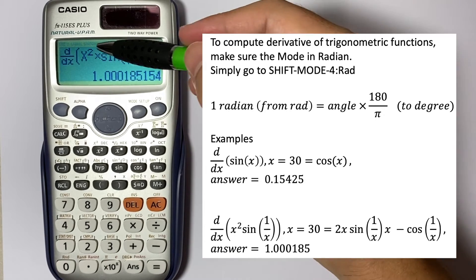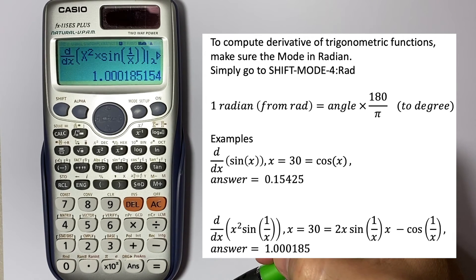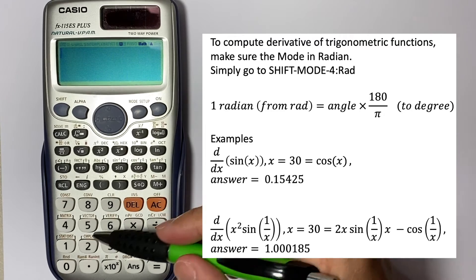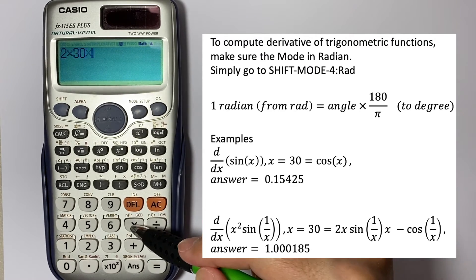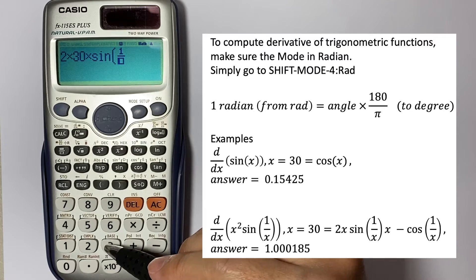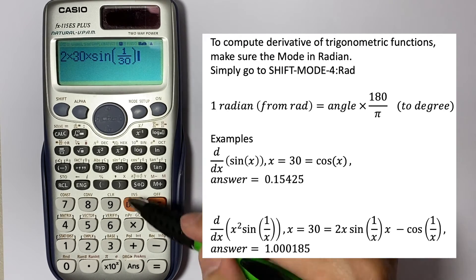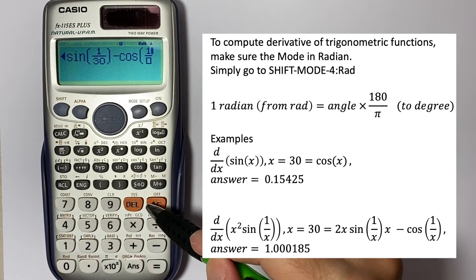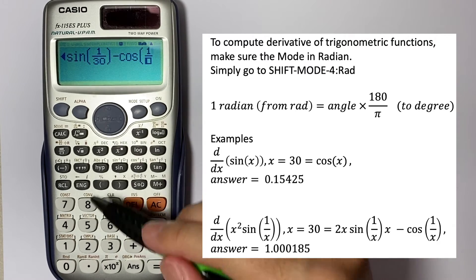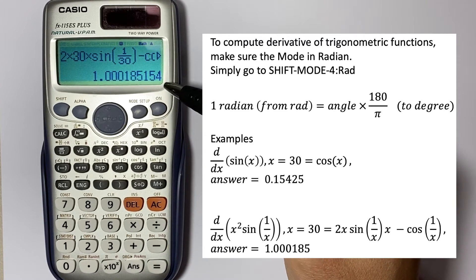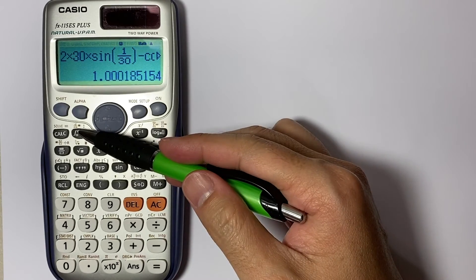The derivative of this equation is actually equal to 2x · sin(1/x) minus cos(1/x). We can verify the answer: 2 × 30 × sin(1/x) × x minus cos(1/x) evaluated at x=30, and that gives back 1.000185, matching the derivative function.